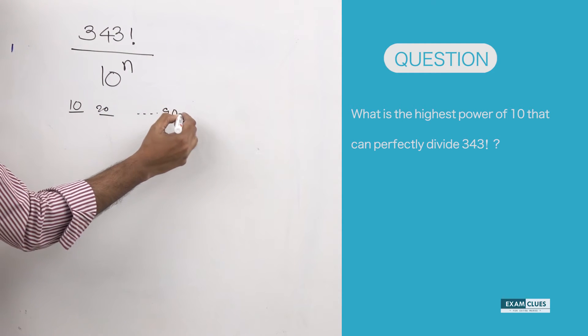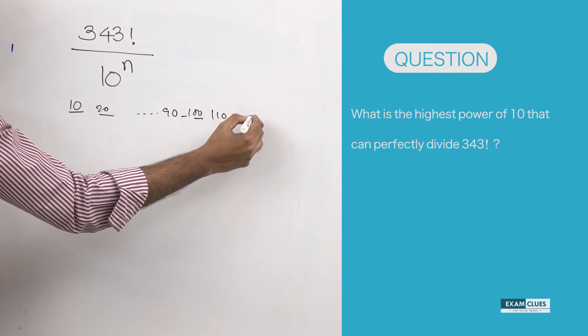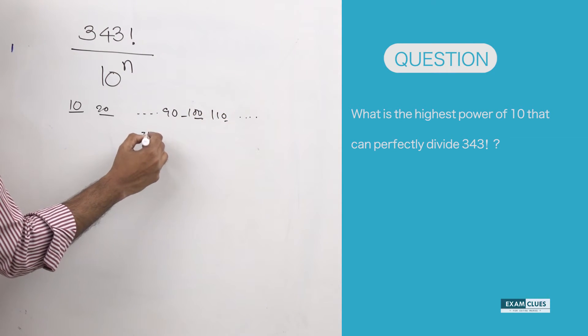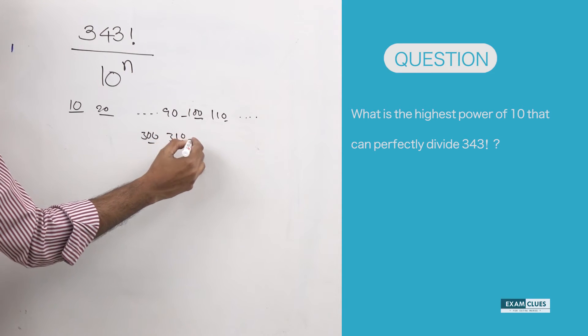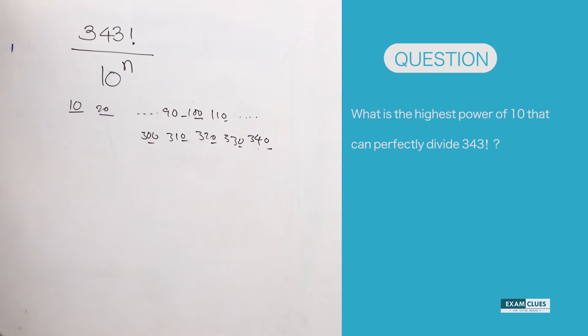Then we'll count up till 300 has two zeros, 310 has one zero, 320 has one zero, 330 has one zero, 340 has one zero. Let's calculate these zeros. Will that be the answer? No.